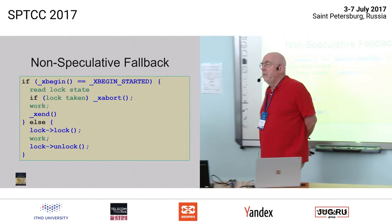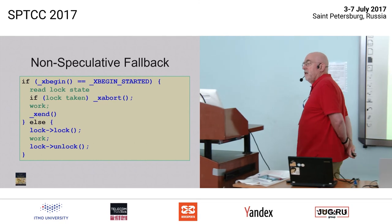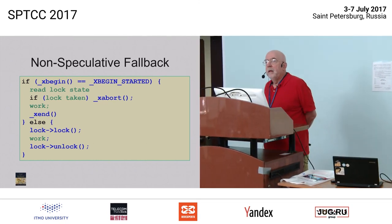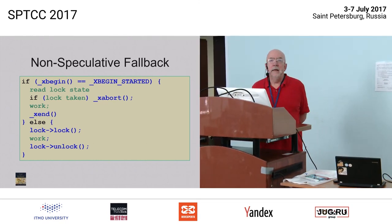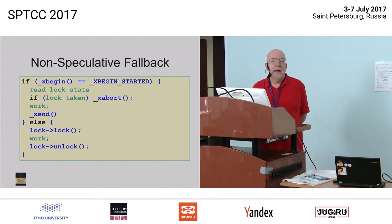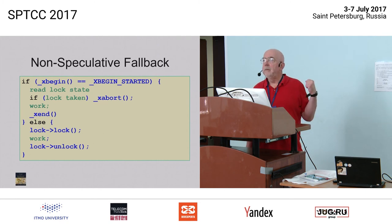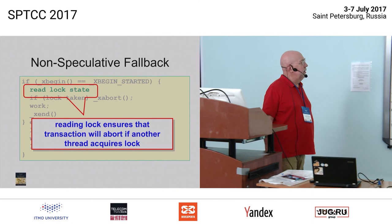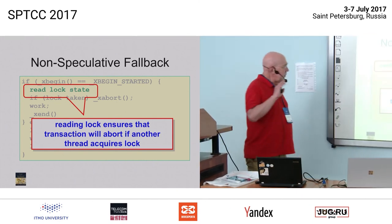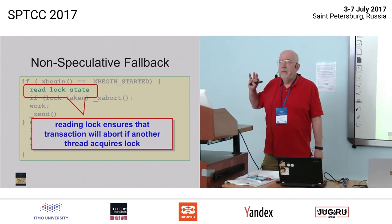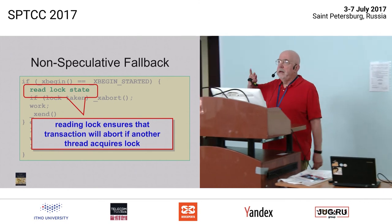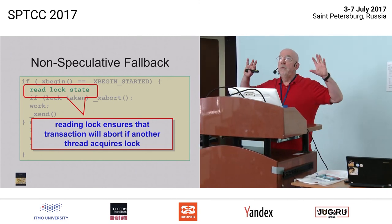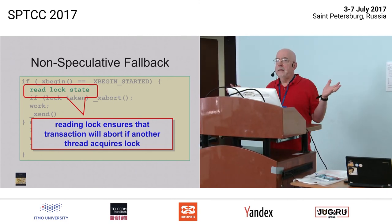The simplest thing you can do is a non-speculative fallback. If I try something and it fails as a hardware transaction, then I say, well, that's enough speculation — I'm just going to do it the old-fashioned way with a lock. The idea is that I'm running my speculative transaction concurrently with other threads that might be using locks.